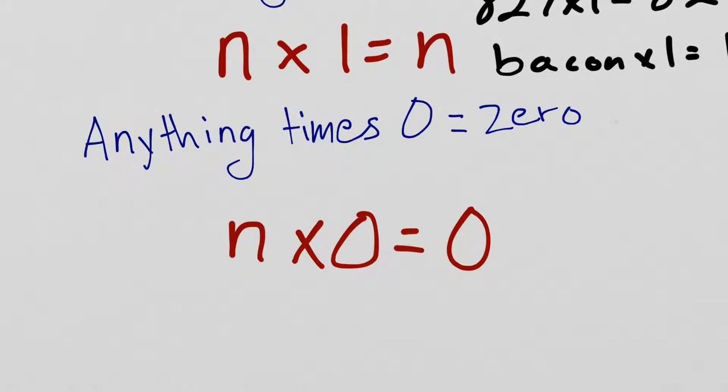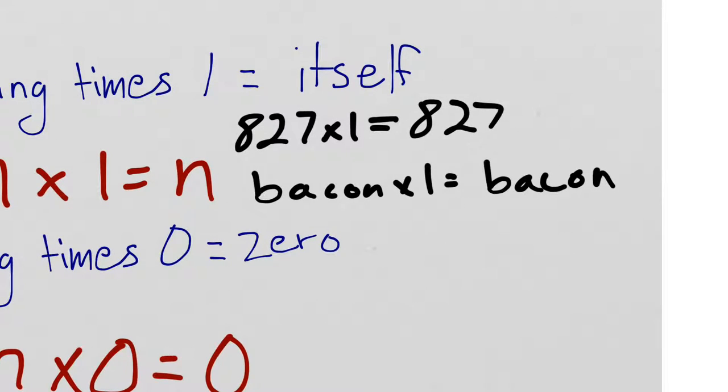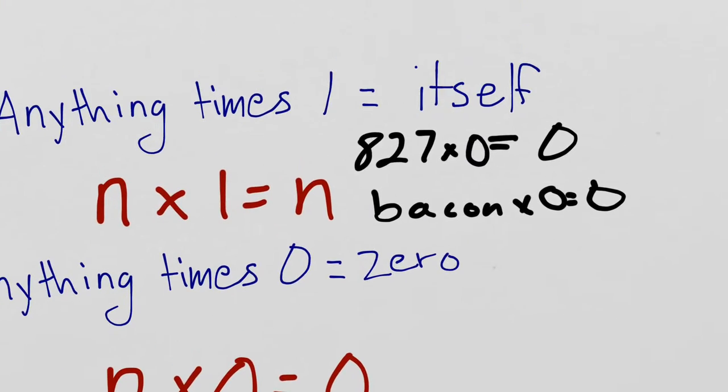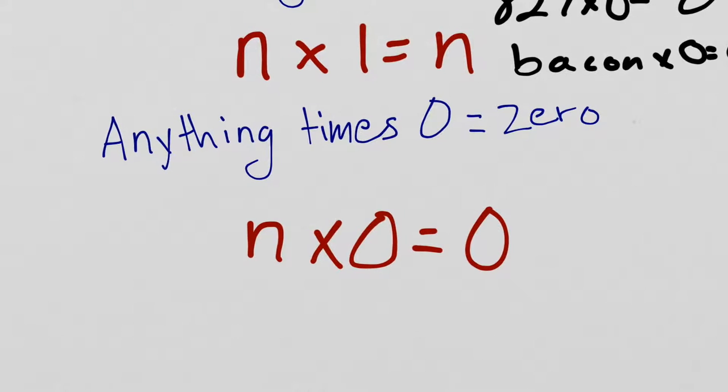Now, what about this? Anything times zero? Anything times zero equals zero. I could take those same examples. Let's change them up. 827 times zero. Well, that's zero. What about bacon times zero? Bacon times zero doesn't equal bacon anymore. You have zero bacon. It equals zero. Anything times one equals the thing that you multiplied. Anything times zero equals zero.